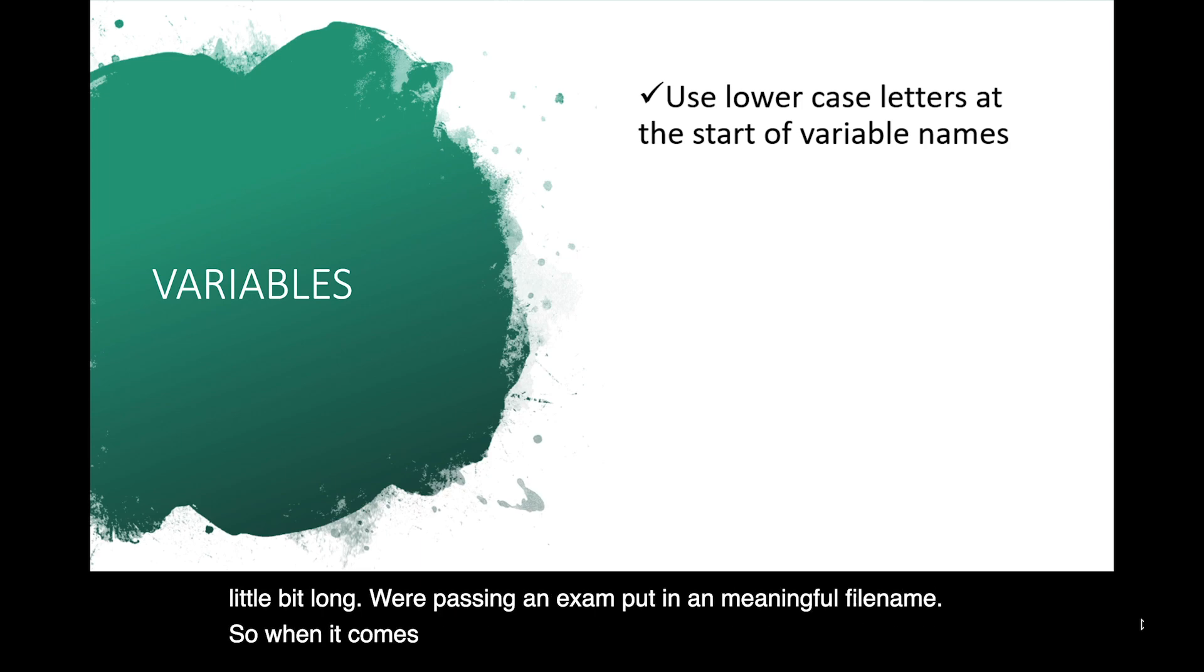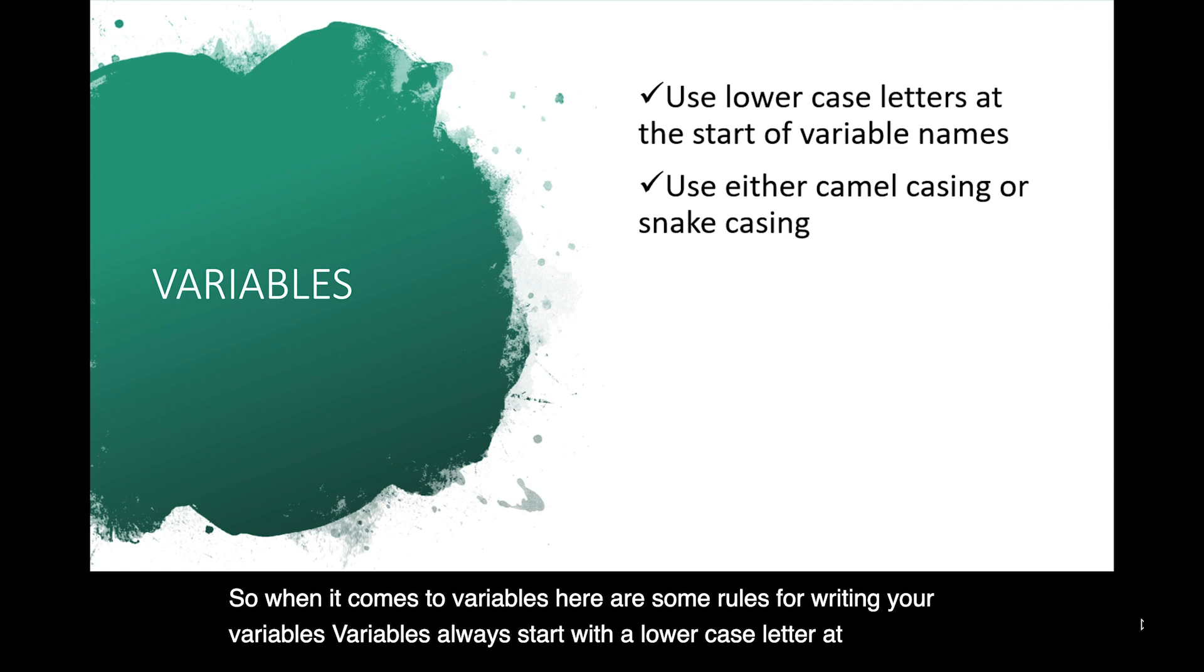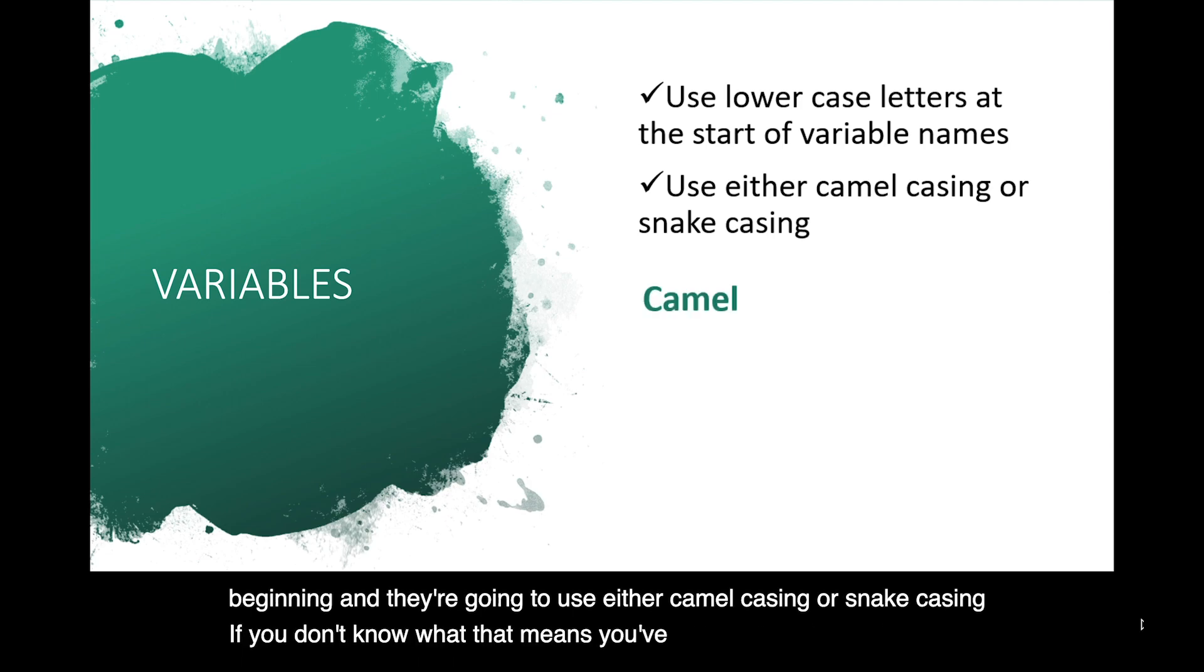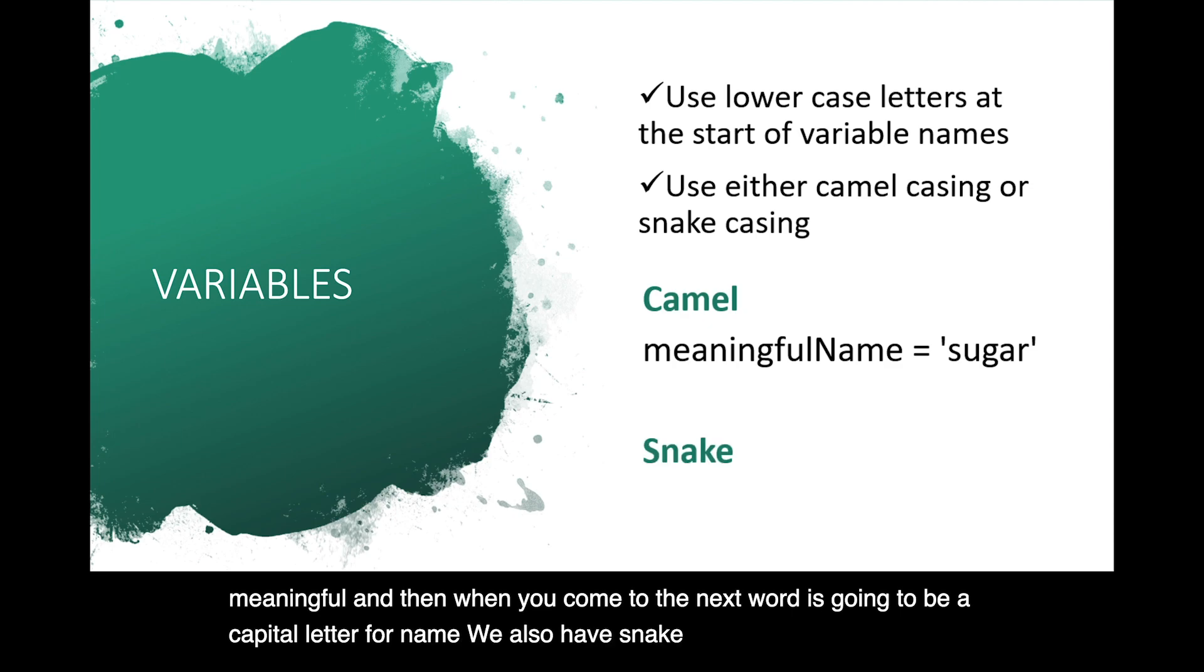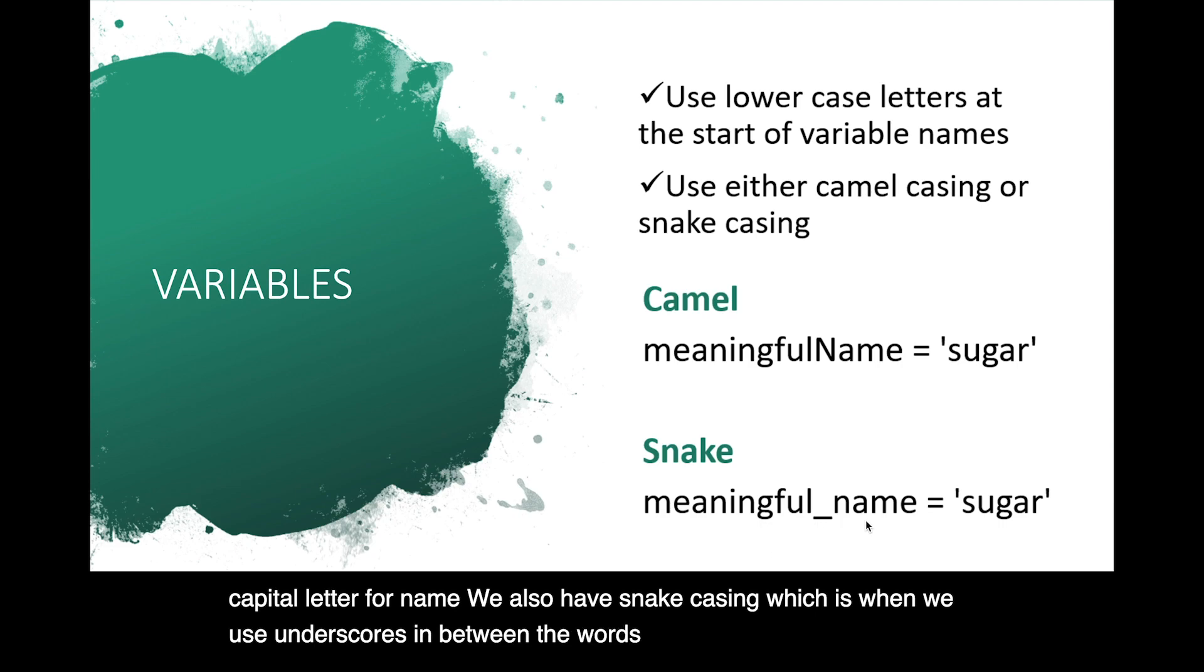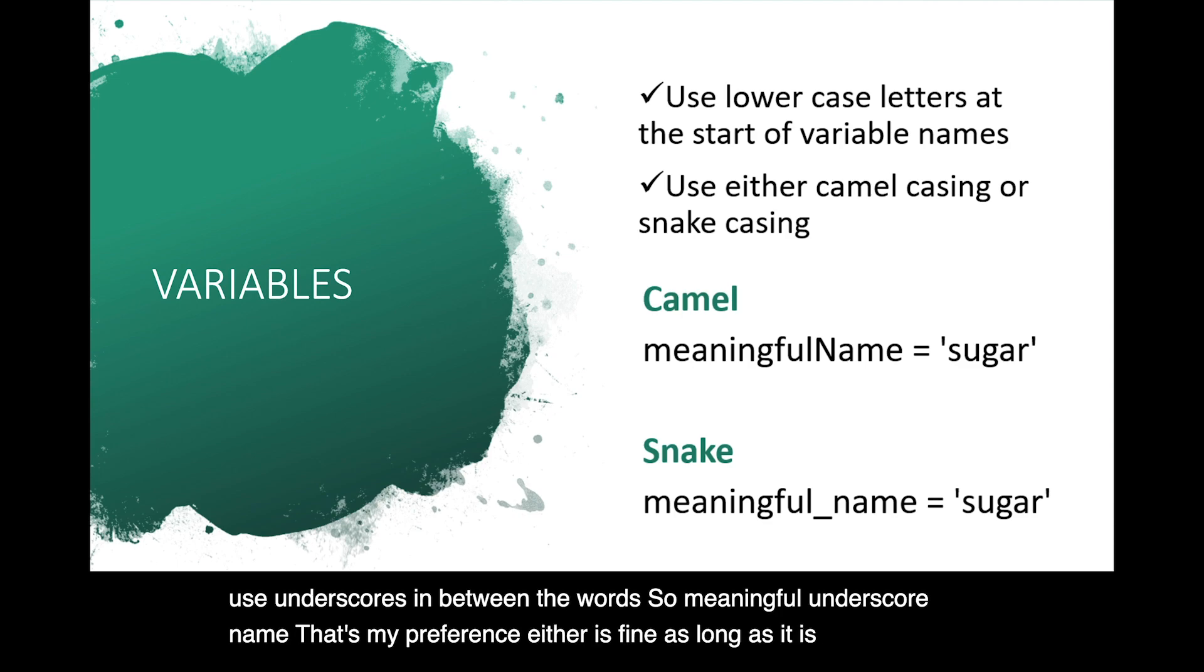So when it comes to variables, here are some rules for writing your variables. Variables always start with a lowercase letter at the beginning, and they're going to use either camel casing or snake casing. If you don't know what that means, you've probably seen it and just maybe not heard that wording. So camel casing is when the first letter is lower, and then every word starts with a capital letter. So we can see it starts with a lowercase because it's a variable. Meaningful, and then when you come to the next word, it's going to be a capital letter for name. We also have snake casing, which is when we use underscores in between the words. So meaningful underscore name. That's my preference. Either is fine as long as it is readable so that you can see the meaningful file name.